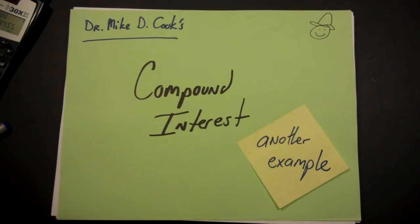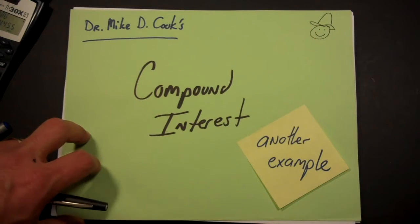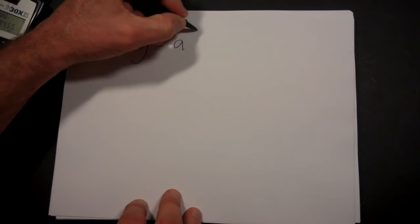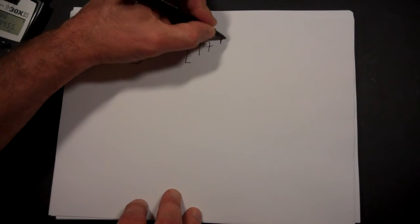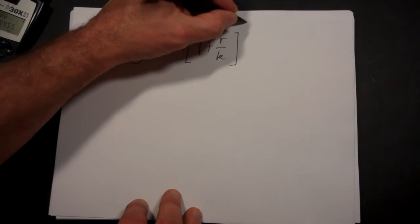This video does another example of a compound interest problem. So the very first thing about compound interest problems, let's write down the formula. The formula is y equals a times the quantity 1 plus r over k, raised to the power of kt.